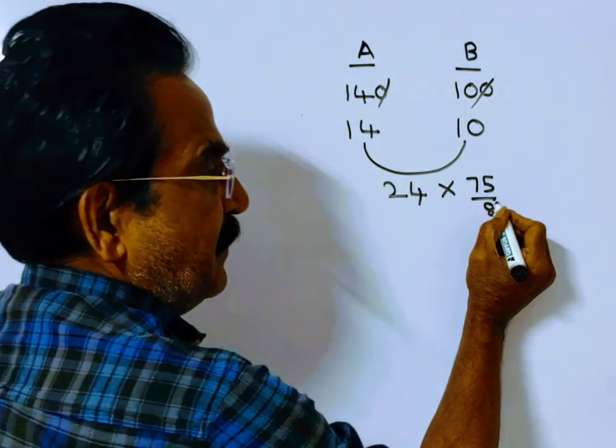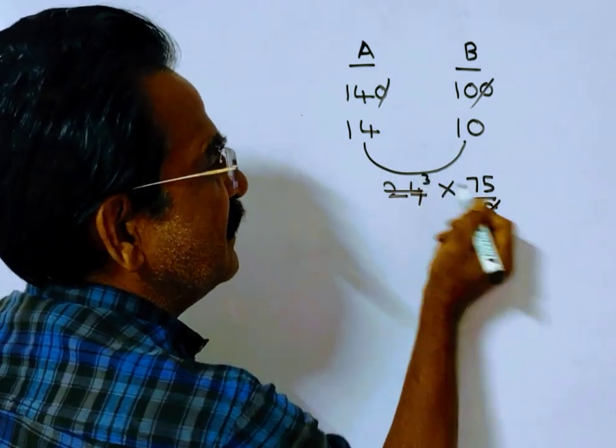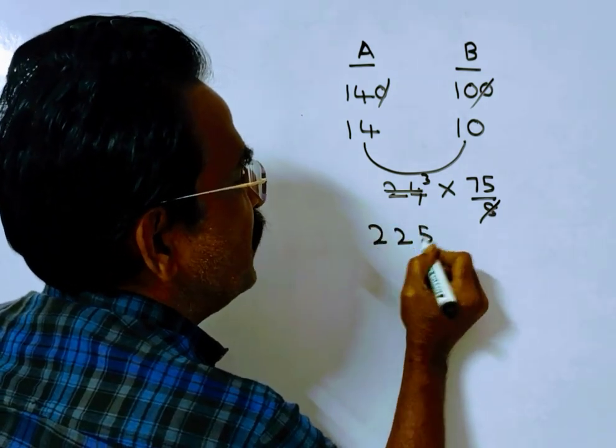That means the total work must be—8 times 3, 3 times 75—225 units.